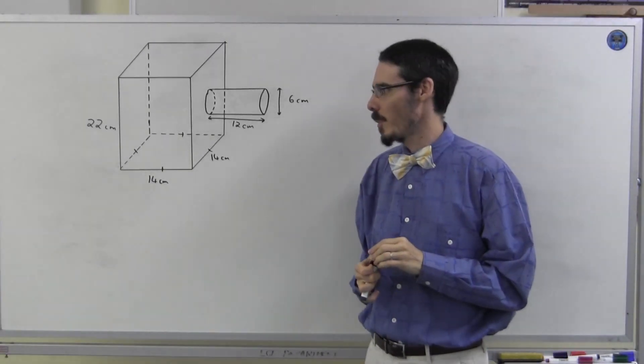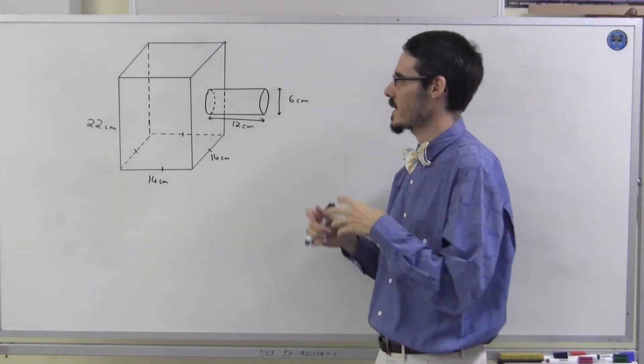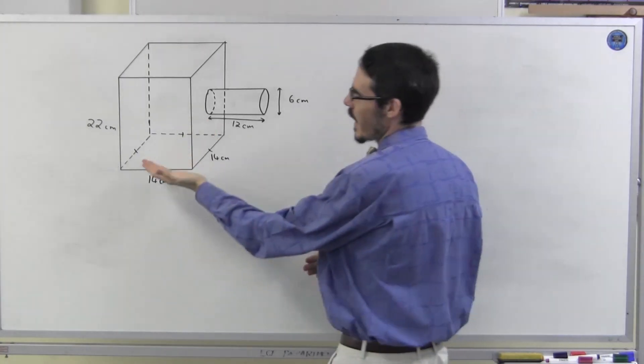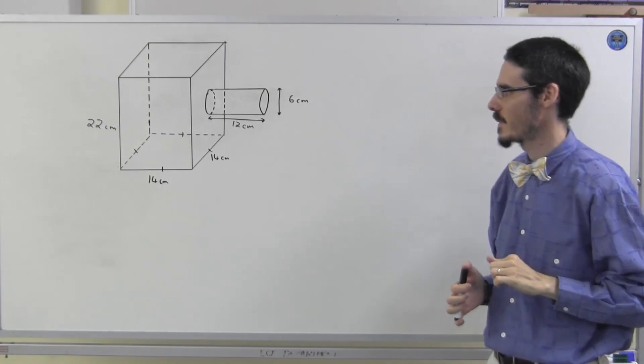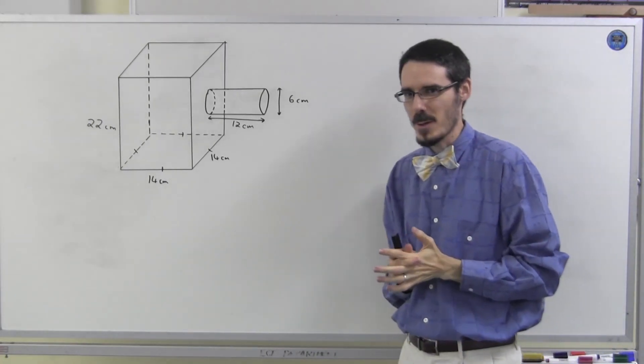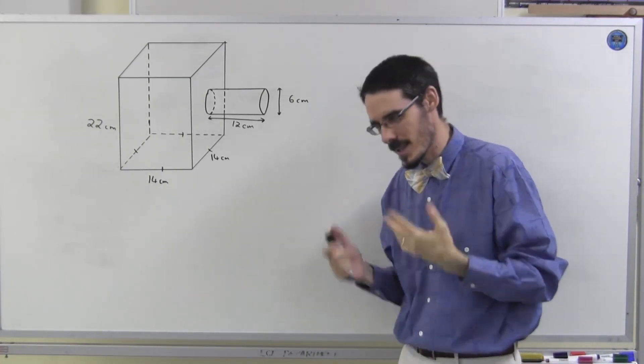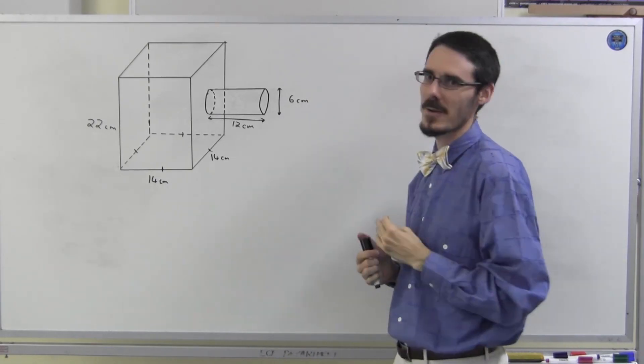So now let's try a slightly more complicated shape. This is a composite solid made up of a square base prism and a cylinder on the end. In fact, I think the volume is going to be easy to work out, but let's stick to our routine and do the surface area first.